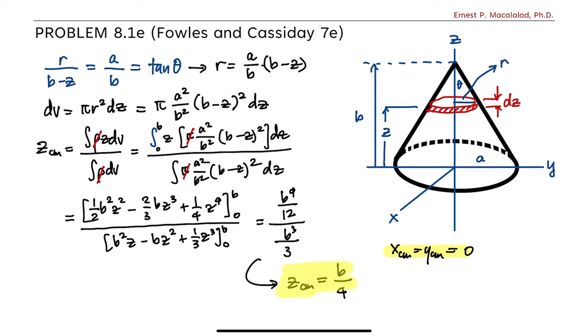So this is now the z component of the center mass of a solid uniform right circular cone of height b. And if we're going to locate that, it should be somewhere at 1 fourth of b from the x-y plane. So this is our center of mass. So that's how you calculate the center mass of a uniform solid right circular cone of height b.